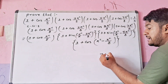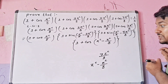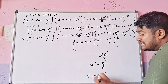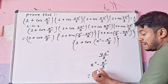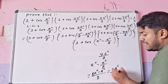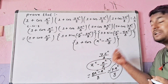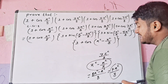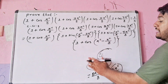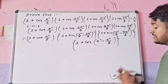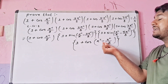For 7π/8, we write it as π minus π/8. So we rewrite 1 + cos(7π/8) as 1 + cos(π − π/8), which equals 1 minus cos(π/8), using the identity cos(π − θ) = −cos θ.